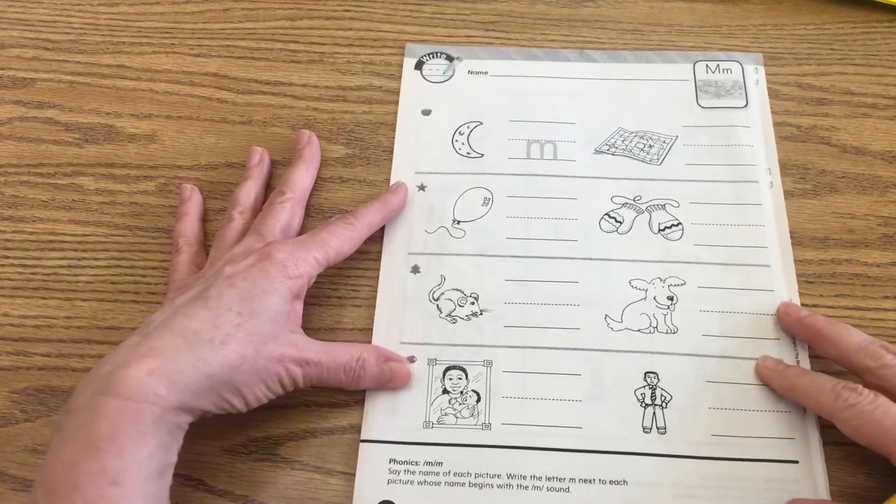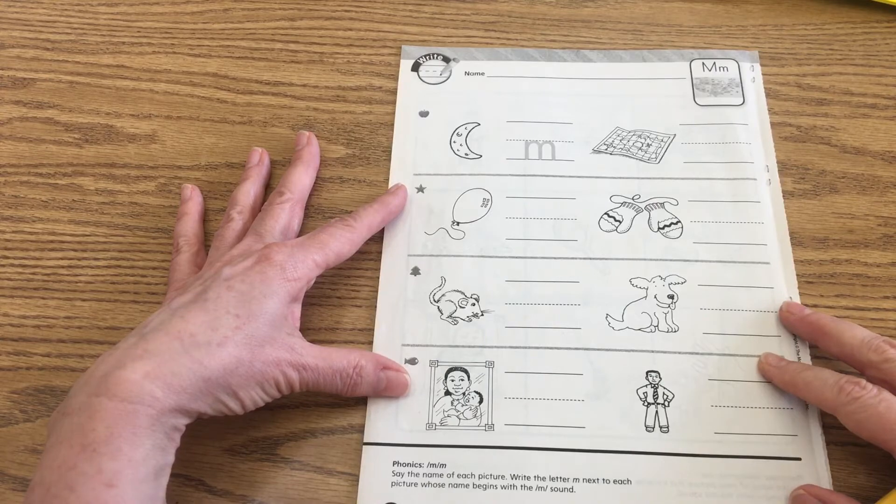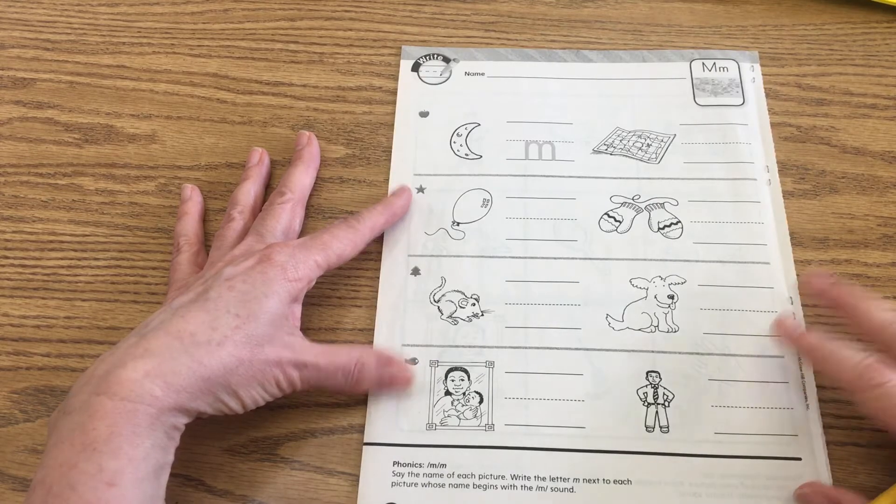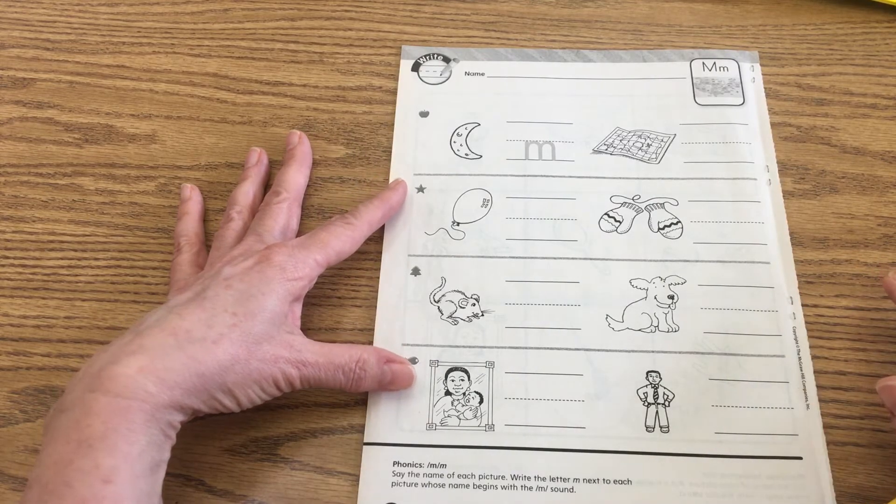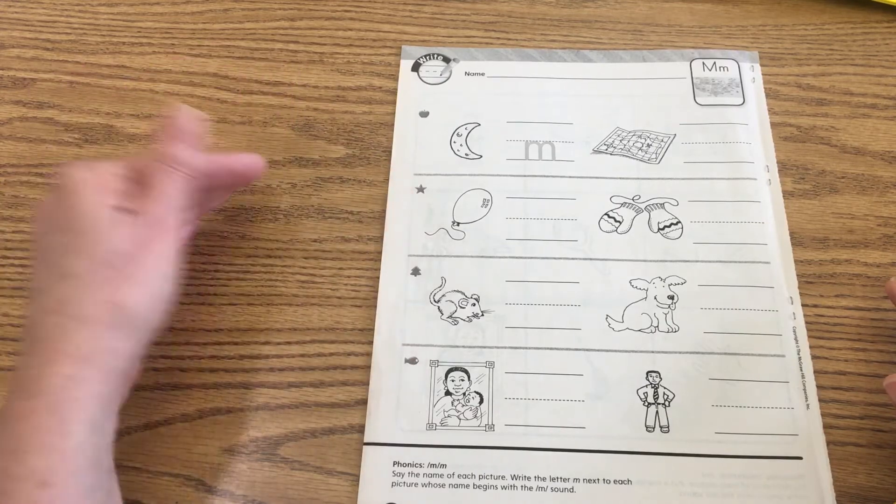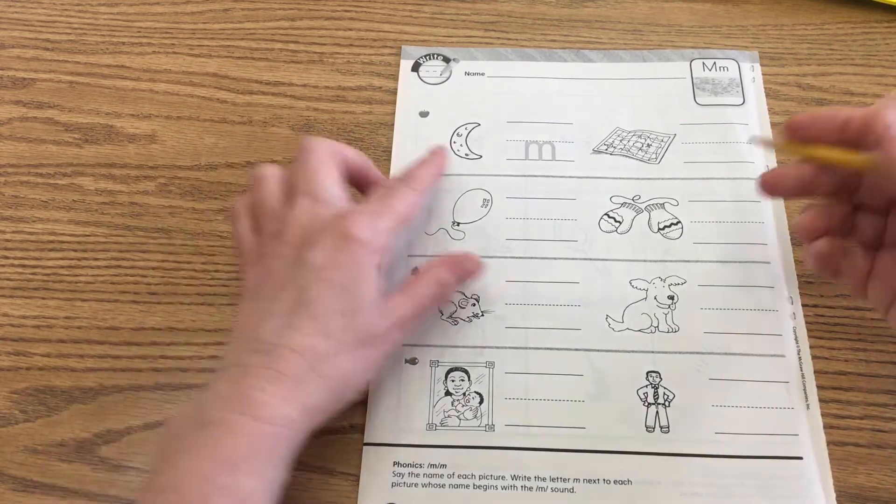Okay, on this page, we're going to write the beginning sounds for the pictures, okay? If it begins with mmm. But I'm going to challenge you, if it doesn't begin with mmm, let's write the lowercase letter that begins that picture. So, for instance, at the top, it says moon.